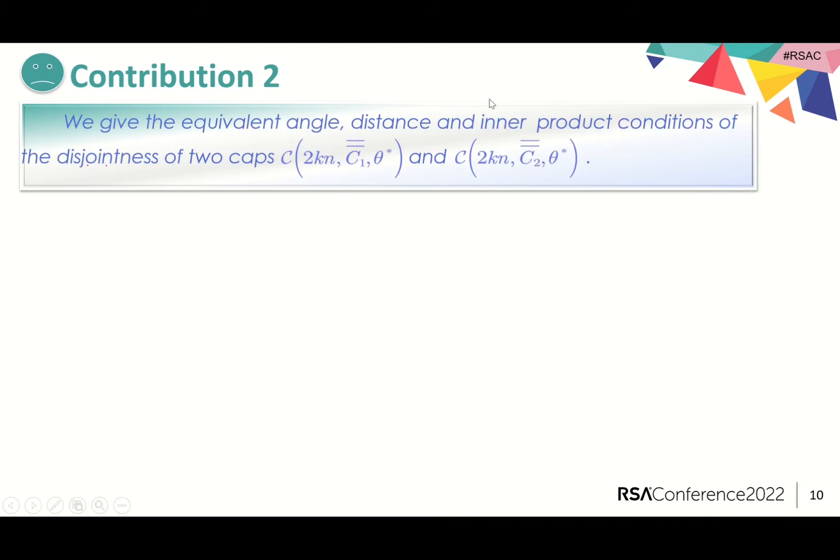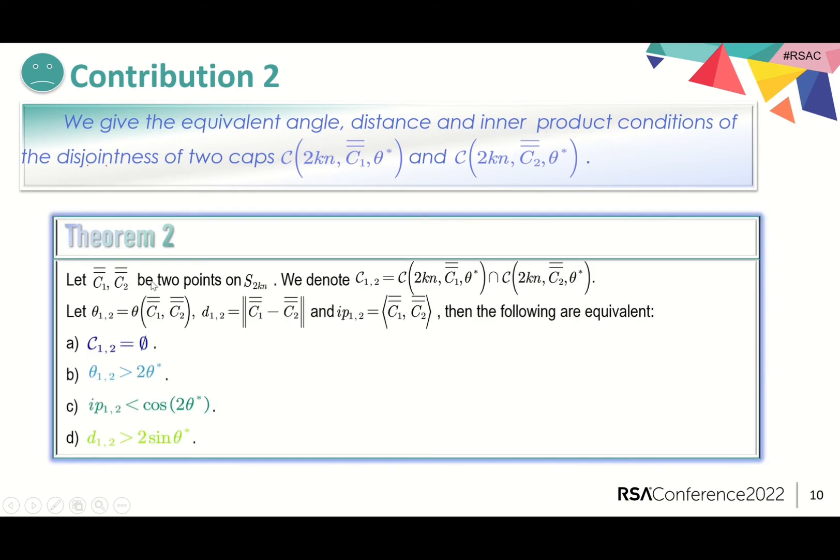So, we give the equivalent conditions of the disjointness of two caps, including the angle, distance, and inner product conditions in Theorem 2. It gives strategies for selecting completely disjoint spherical caps. The adversary can choose one of these conditions to check the disjointness.